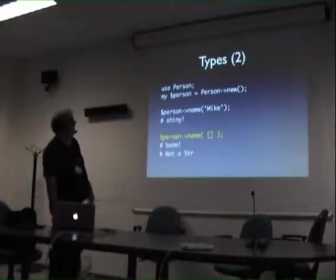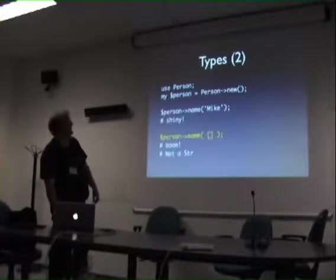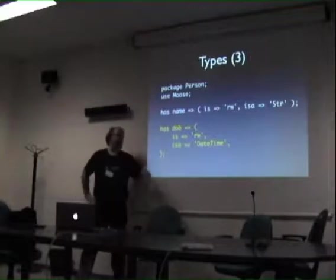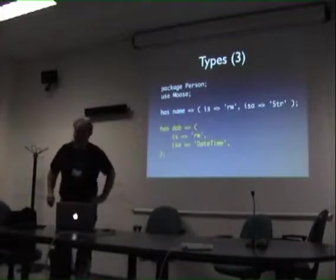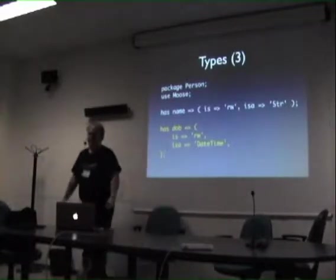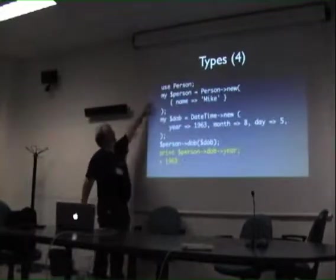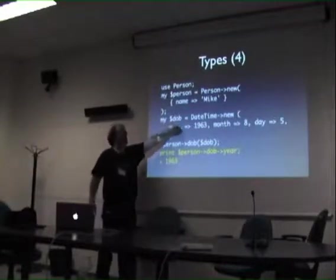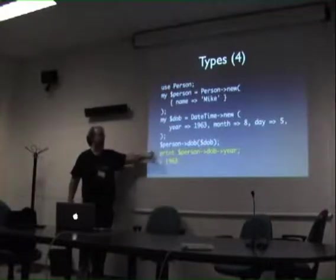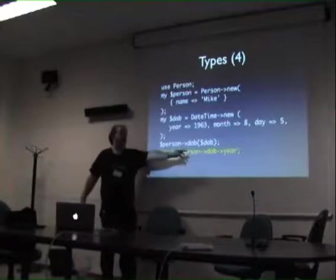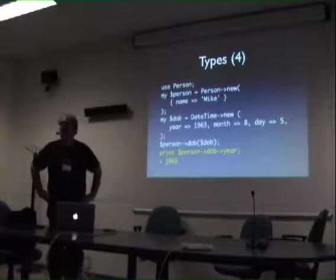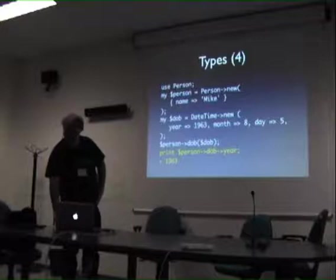The other useful thing is that in the absence of a defined type, Moose will treat the string as a class name. That means `dob` (date of birth) must contain an object which is a `DateTime` class. So I can say, `Person->new(name => 'Mike')`, set my date of birth via `DateTime->new(year => 1963, month => ...)`. That date of birth attribute now contains a DateTime object, so I can do all the standard DateTime things like `$dob->year` returning 1963. That gets you an awful lot of control over what goes in your object's attributes.